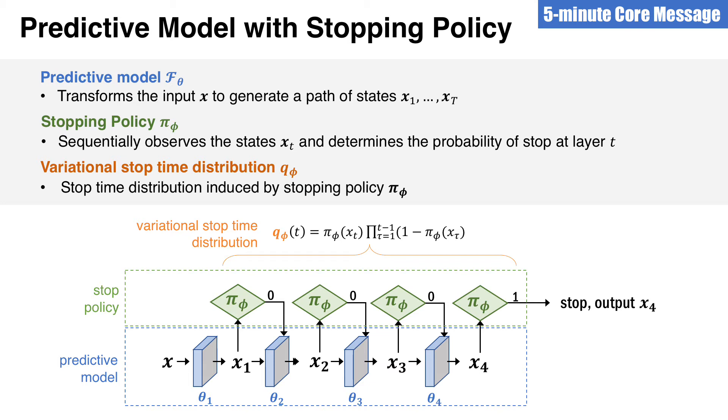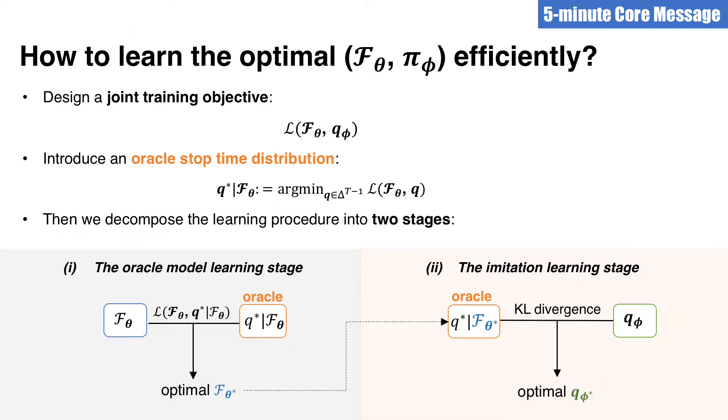Now, given this model, the question is how to optimize it? It is obvious that for a different predictive model f_theta, the optimal stopping strategy will be different. So these two components are tightly coupled together. How to learn both of these two components efficiently and also optimally? It is a challenging question and it is the main goal of this paper. Now, we introduce how to optimize these two components.